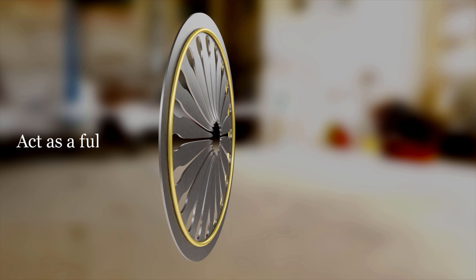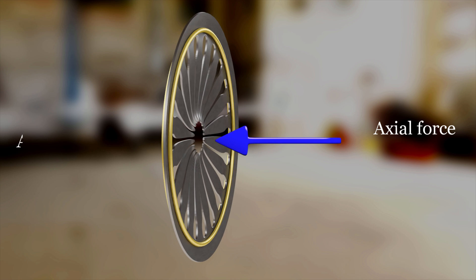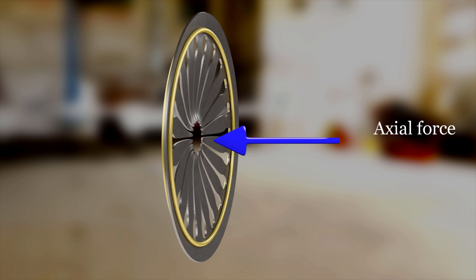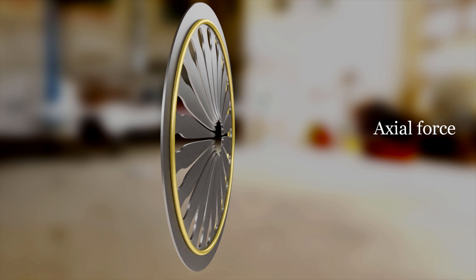These wire rings act as a fulcrum for the diaphragm spring, and therefore when axial force is applied at the center of the spring, its outer edge moves in the opposite direction, and when force is removed, the spring goes back to its initial position.